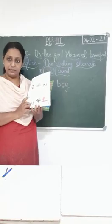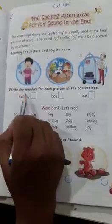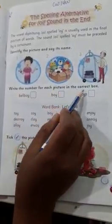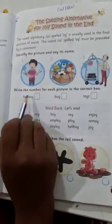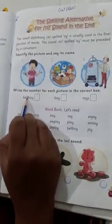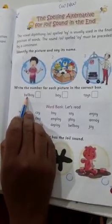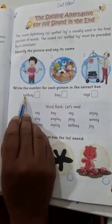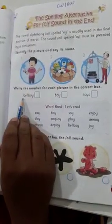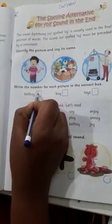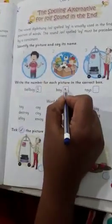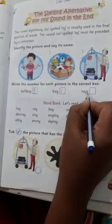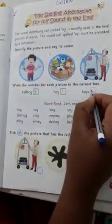Here you have to write the number for each picture in the correct box. B-A-L-L-B-O-Y — two consonants make one sound, it's L-L. Bell boy — I write number three. Then B-O-Y — boy — this is a boy, number one. Then T-O-Y-S — toys — number two.